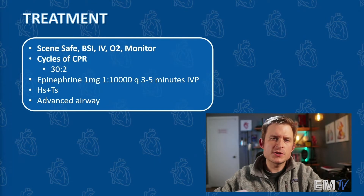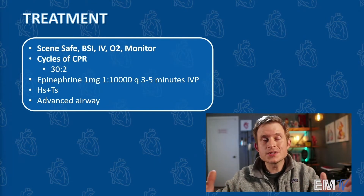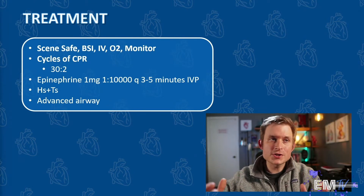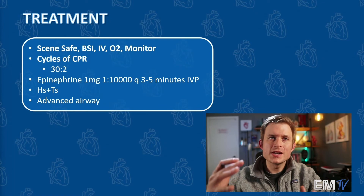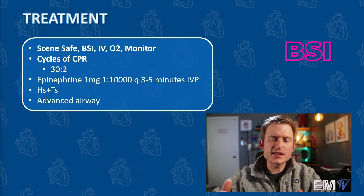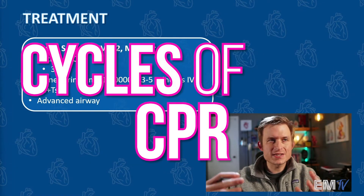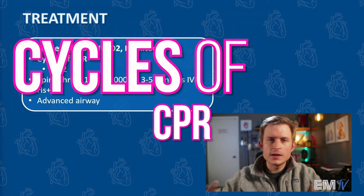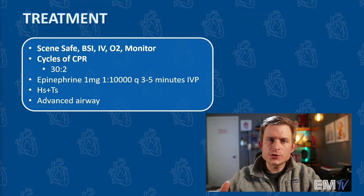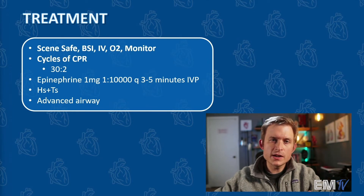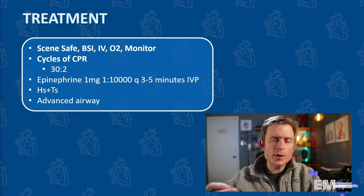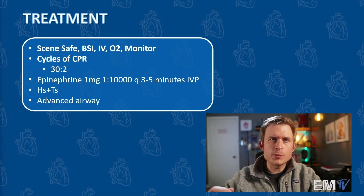Treatment of this patient is going to begin just like we begin all static cardiology cards, by regurgitating the mantra: scene safe, BSI, IV/O2/monitor. We'll then be doing cycles of CPR with a compression to ventilation ratio of 30 to 2. Because this is PEA, we'll be delivering epinephrine 1 to 10,000, 1 milligram, every 3 to 5 minutes IV push.